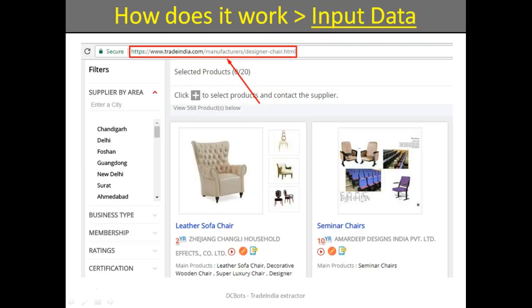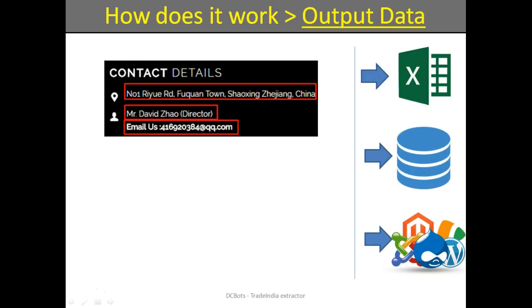How does it work? As input data, you set the Trade India listing link, then just launch the data extraction process in DCBots software. Finally, you receive contacts and other essential data on manufacturers, suppliers and exporters.